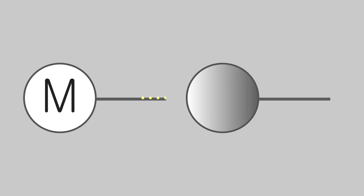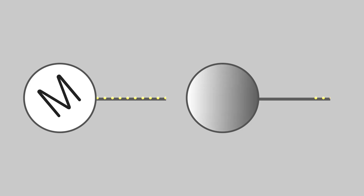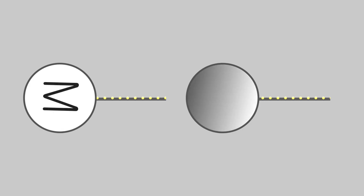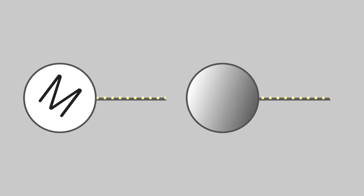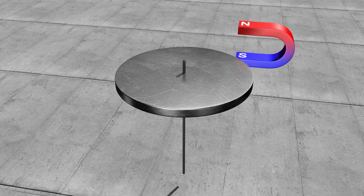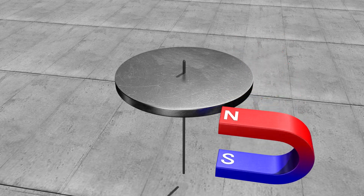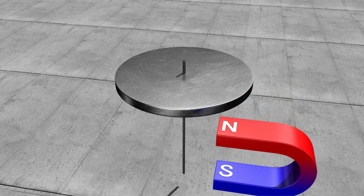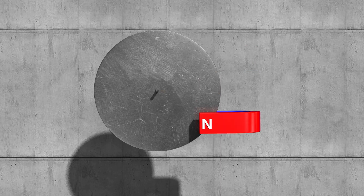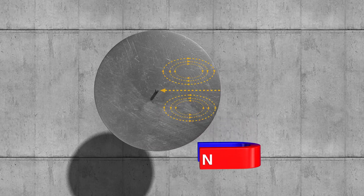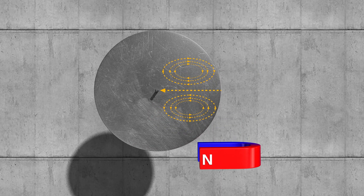In order to turn the motor, an electric current must be supplied. Similarly, the disc will turn if we supply electric current to it. Still, the disc turned even though there was no electric current and only a magnet. It's because induced current was created by the change of the magnetic field instead of externally supplied electric current. This induced current causes the disc to rotate.